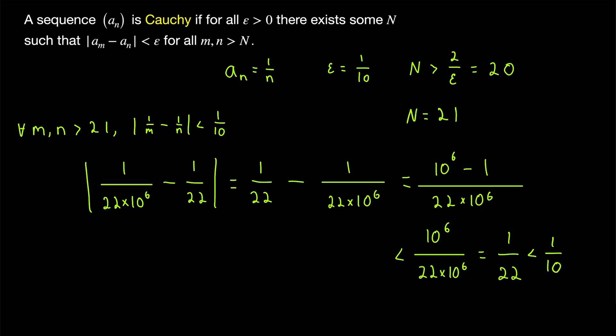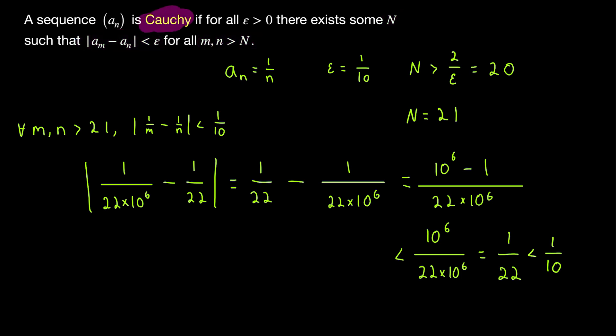So hopefully that gives you a feel for what it means for a sequence to be Cauchy. If a sequence is Cauchy, then for any positive number epsilon, there exists some point in the sequence after which any two terms are within epsilon of each other. The big idea here is that if a sequence converges, the terms can only be so far apart after a certain point, because they're all getting closer and closer to a common limit. Conversely, if a sequence is Cauchy and its terms are getting closer and closer to each other, it seems reasonable that they must be getting closer to a common limit.